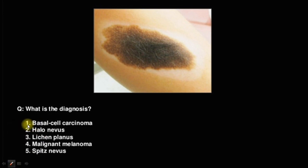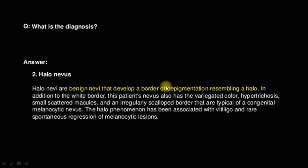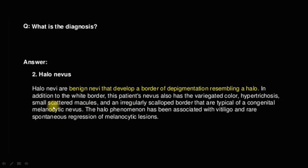This picture is halo nevus. You can see the irregular pattern on the outside. Also inside the nevus there is hyperpigmentation. You can see the border of deep pigmentation, also hypertrichosis, and a whitish border. The markings are irregular. Halo nevus is a benign nevus that develops a border of deep pigmentation, variegated color, and hypertrichosis. There are small scattered macules and an irregularly scalloped border — a typical congenital melanocytic nevus. The patient may also be associated with vitiligo and spontaneous regression of these melanocytic lesions.